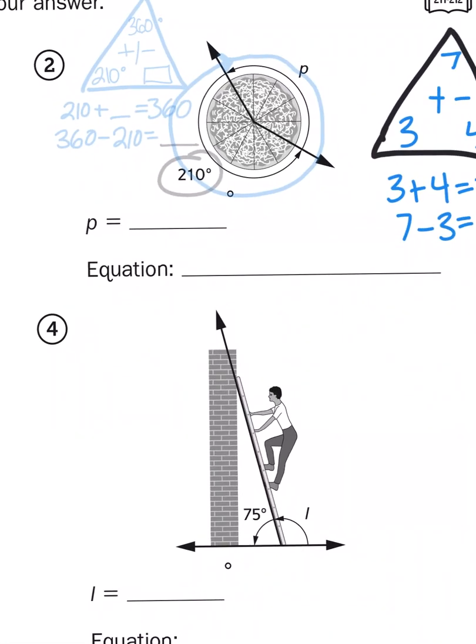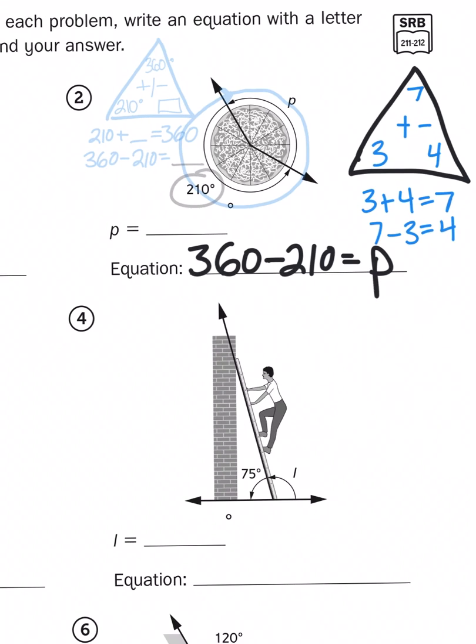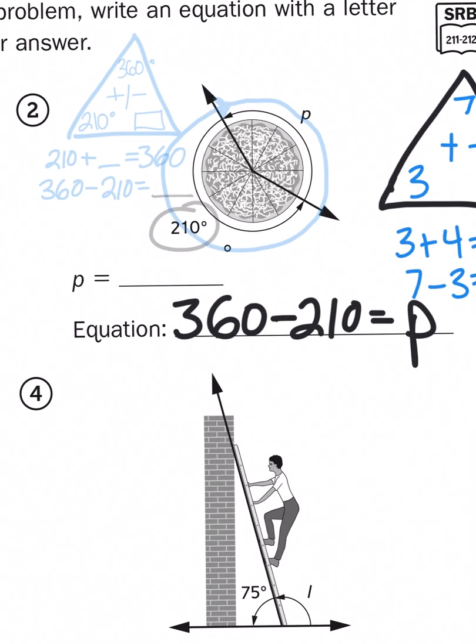So my equation could be either one of those two problems I set up over by my fact family triangle. 210 plus something gives me 360, or 360 minus 210, equals p is my missing number. And we've learned that p equals 150 degrees.